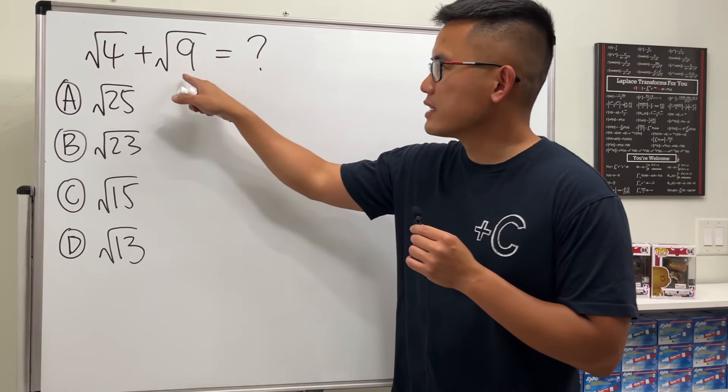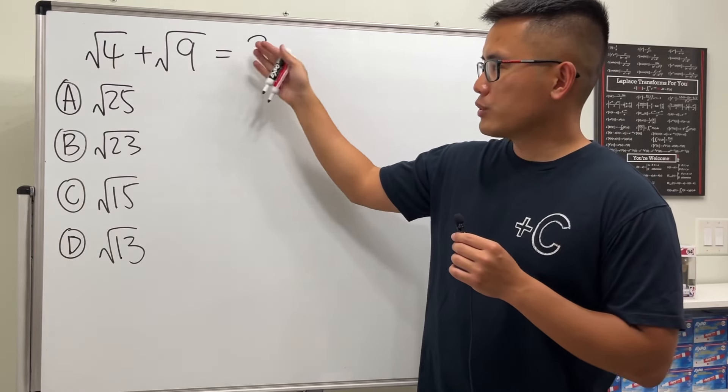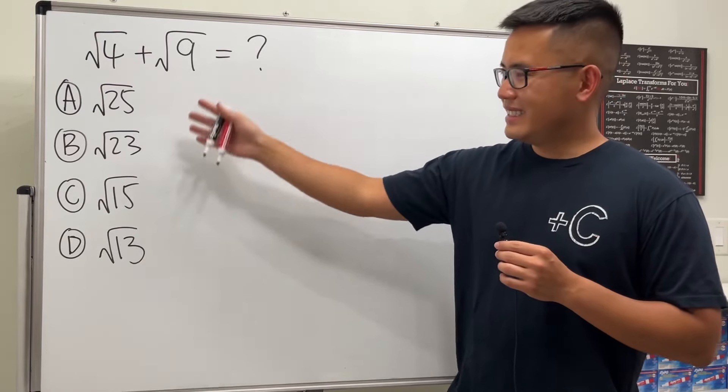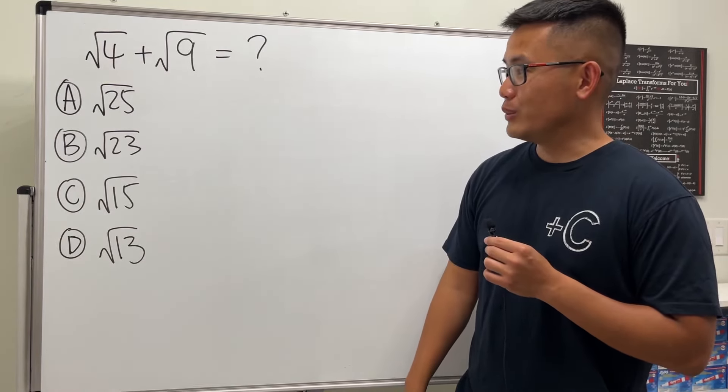We have the square root of 4 plus the square root of 9, and we're trying to find out what this is equal to. Here I give you these choices, and they all have square roots, so be careful with it though.